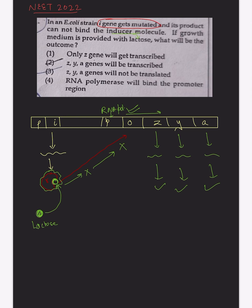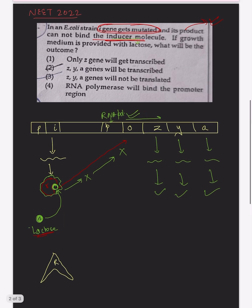Now, according to the question, the i gene has been mutated in such a manner that its product — the repressor — is still being formed, but the repressor is no longer able to bind to the inducer molecule, which is lactose. So the repressor is formed, but it is a different repressor, and lactose can no longer bind to it.